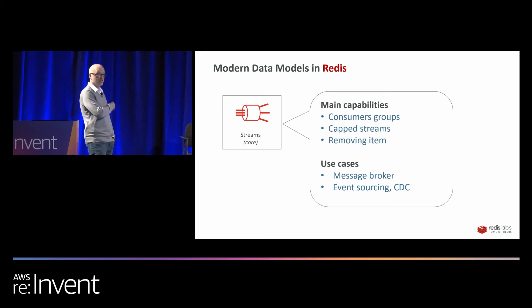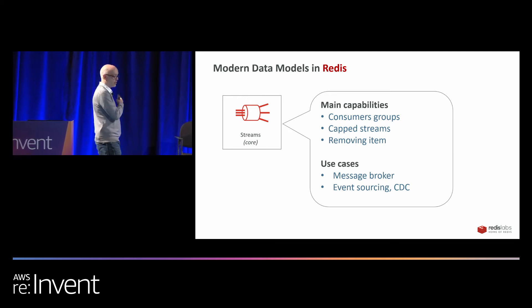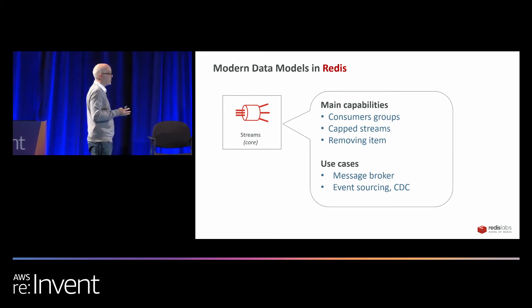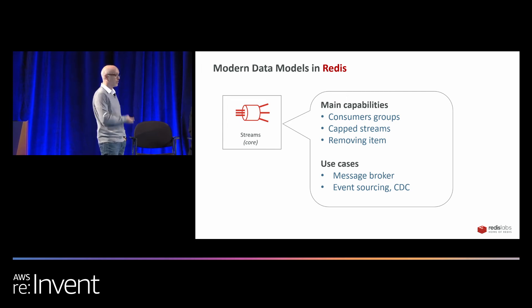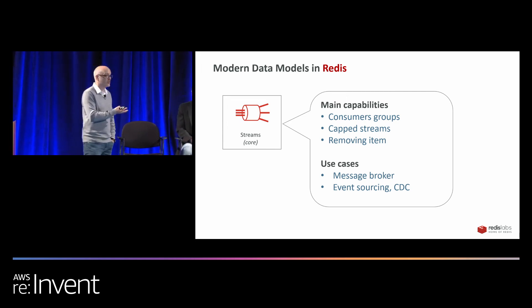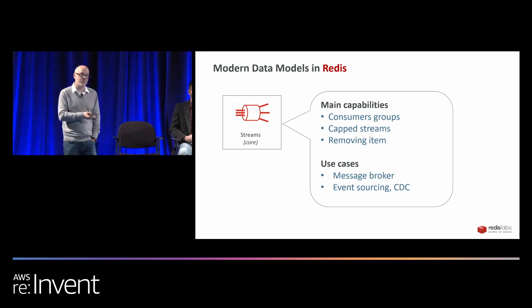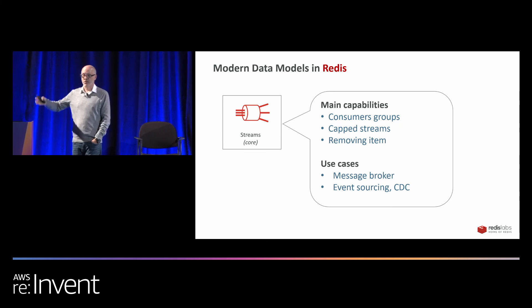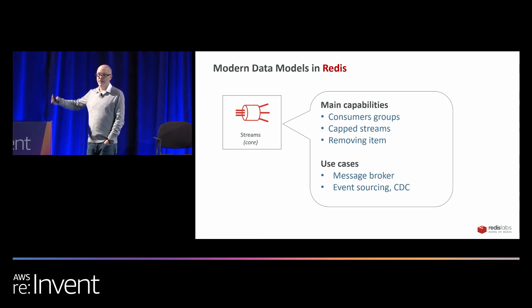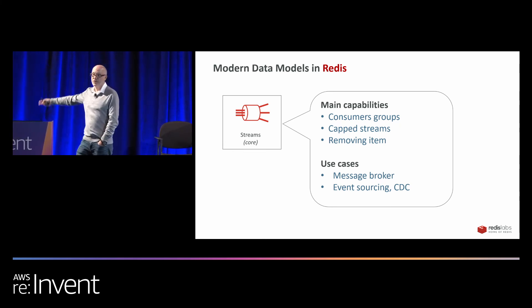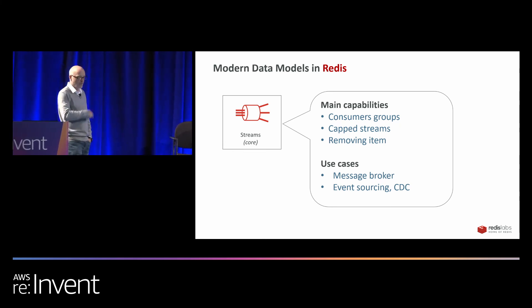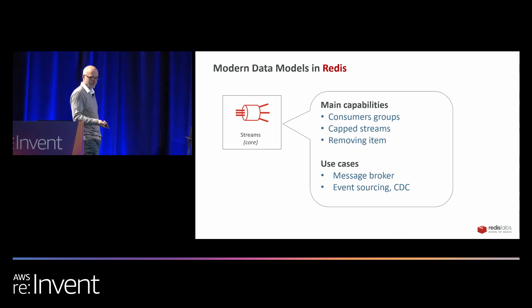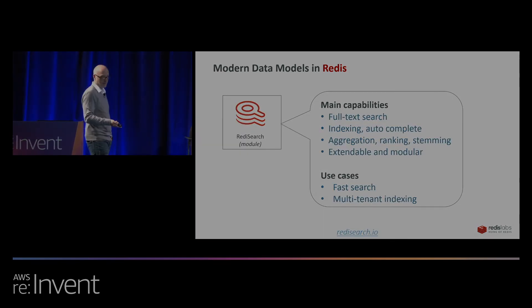If you want to consume a huge stream of data, like in IoT, or events that have been generated out of systems, you want to be able to consume those and then process them at the rate. That's one way we've extended Redis.